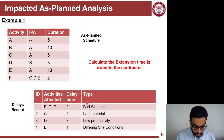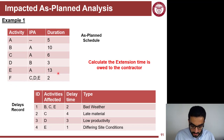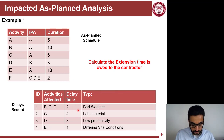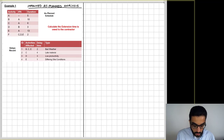Now let's work through this exercise on the board. We have six activities A through F. We're given the immediately preceding activities (IPA) and the duration of each. A is the starting activity; B, C, and E depend on A; D depends on B; and F depends on C, D, and E. We also have a record of delays with the type of each delay and its time impact.